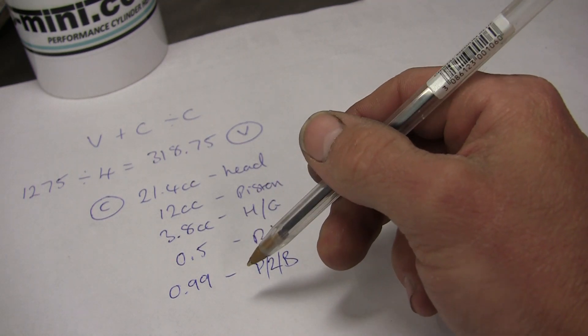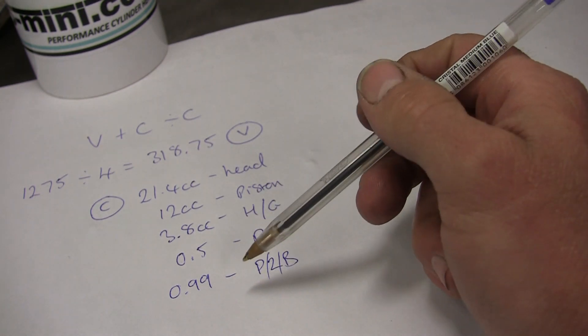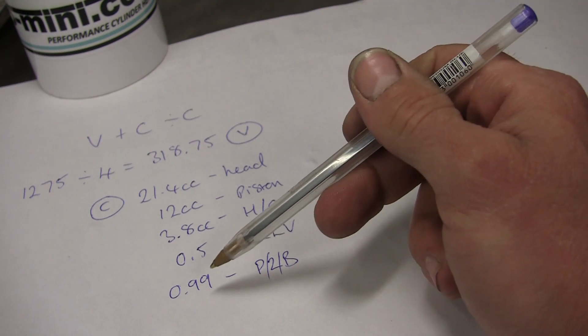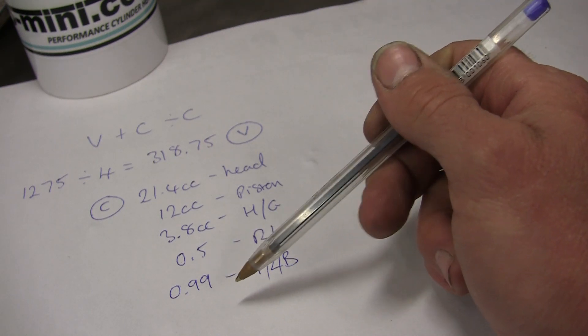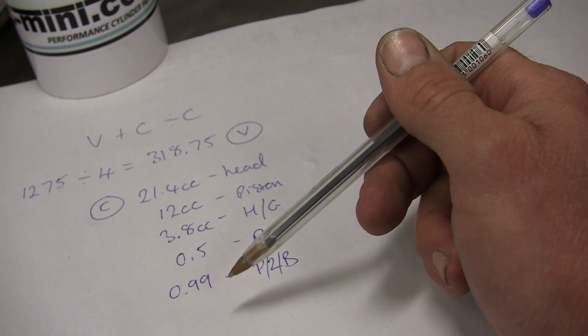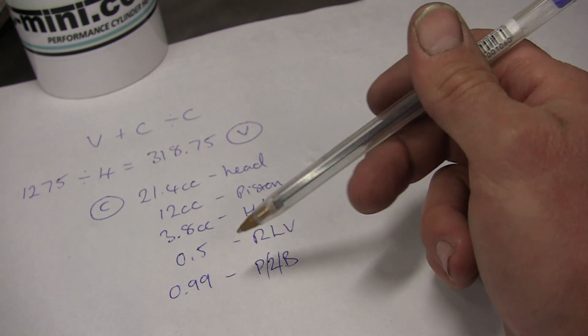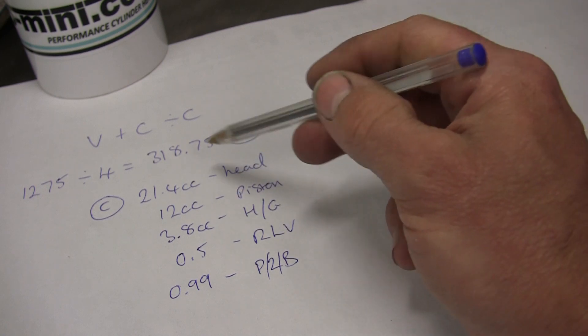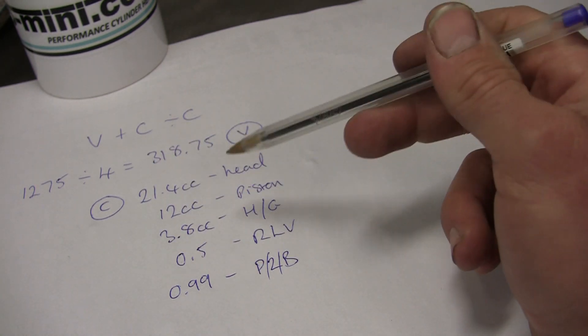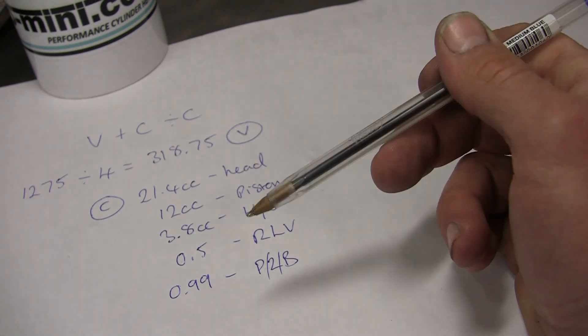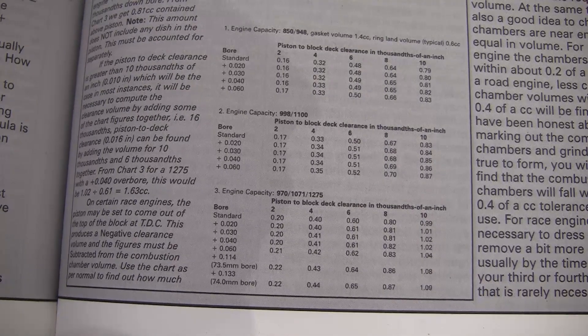That's piston-to-block clearance—one cc. But you need to measure that, because if it's 15 thou, it's almost one and a half cc; if it's 20 thou, it's almost two cc. It does make quite a difference. It's not something you can look at by eye—you need to measure properly. Once you've got all those figures, you can add them up, and that gives you C.